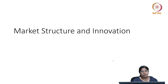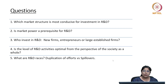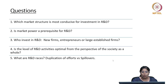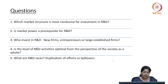The topic we are going to start today is about market structure and innovation. The questions we are going to try and answer are related to how a particular kind of market structure is conducive for investment in research and development. Does a firm need to have market power as a prerequisite for investment in R&D? Who invests in research and development — whether the investment comes from new firms, entrepreneurs, or large established firms? Is the level of R&D being undertaken in an industry optimal from the point of view of society as a whole? What about R&D races, duplication of effort, and spillovers?